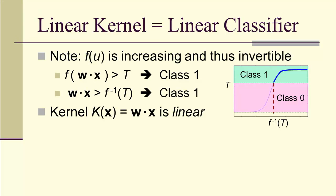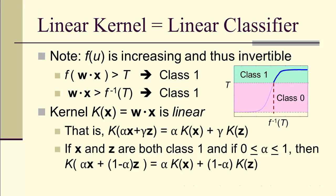The kernel is linear. If I apply the kernel to a linear combination of vectors, I get the linear combination of the kernels. Notice what this means: if x and z are both in class 1, and if alpha is between 0 and 1, then the kernel applied to the linear combination alpha x plus 1 minus alpha z is alpha times the kernel of x plus 1 minus alpha times the kernel of z. Both k of x and k of z are bigger than f inverse of T, and therefore the k of the linear combination is greater than f inverse of T because alpha plus 1 minus alpha is just 1.